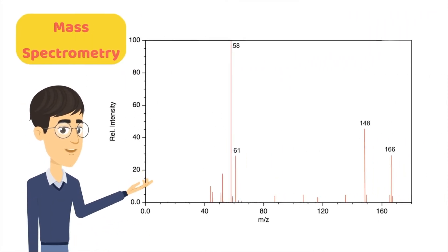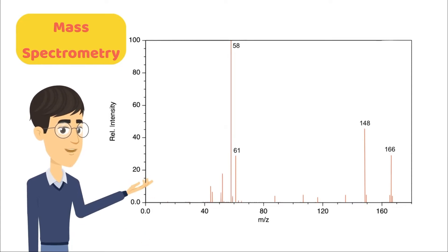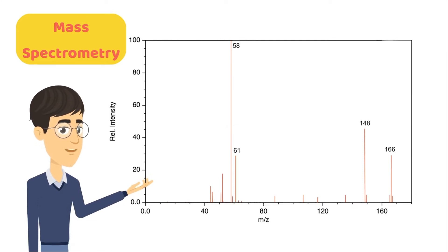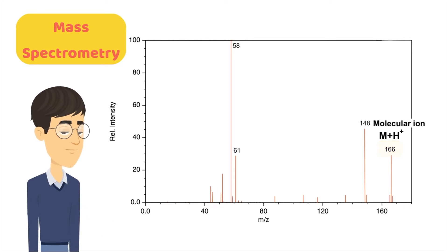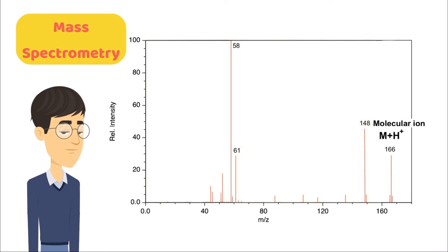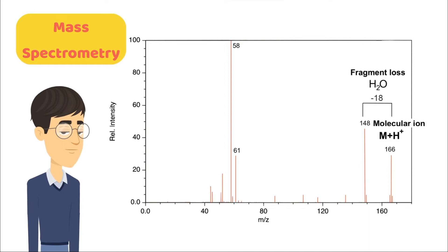Using mass spectrometry, Prapto can find the molecular weight of the compound and its possible structure based on the fragmentation pattern. Using a soft ionization method such as chemical ionization, we can find the molecular ion at the rightmost of the spectrum, which tells us about the molecular weight of the compound. Based on the mass of fragment ions on the left side, we can perform subtraction to find the fragment loss and what molecule or radical ion was released during fragmentation.